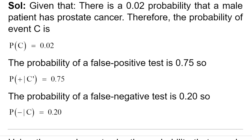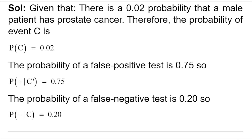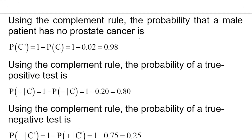We need to find some more probabilities before continuing to Part A. Using the complement rule of probability, the probability that a male patient has no prostate cancer is 0.98. The conditional probability that the test gives a positive result given that the patient has cancer is 0.80. Using the complement rule again, the conditional probability that the test gives a negative result given the patient does not have cancer is 0.25.